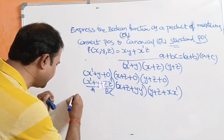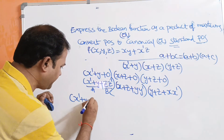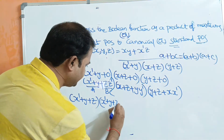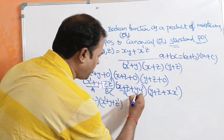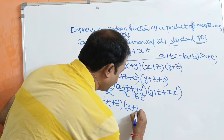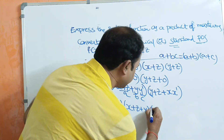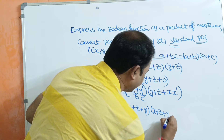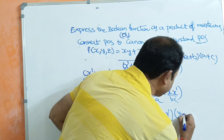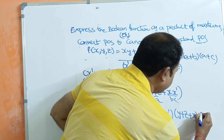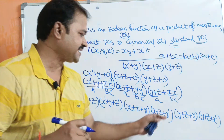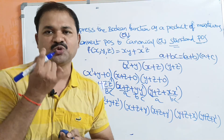For the second term (x + z), y is missing, so we replace 0 with y·y', giving (x + z + y)(x + z + y'). For the third term (y + z), x is missing, so we replace 0 with x·x', giving (y + z + x)(y + z + x'). Applying the distributive law a + bc formula to each.